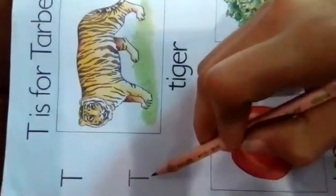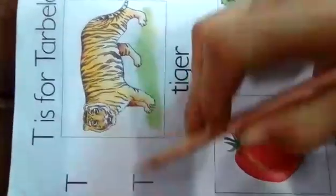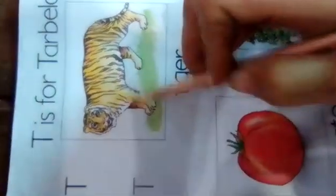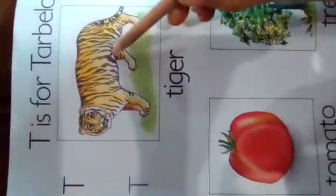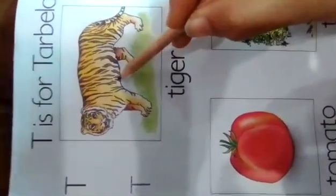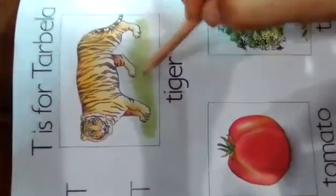Today we learn letter T is for Tiger. T is for Tiger. Student, tiger is an animal. It lives in a jungle and it looks very strange.